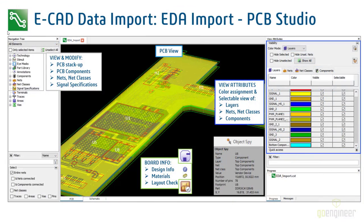After your PCB is imported, you are in an environment where you can see the cross-section. You can see whether it is a ground layer or signal trace layer, what the thickness and elevation are, the physical properties like connectivity, and the epsilon values with all the info you need.